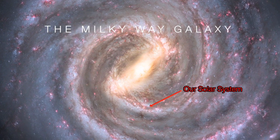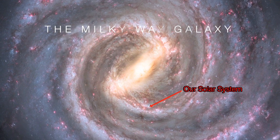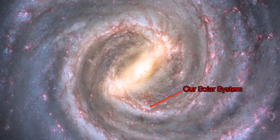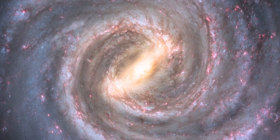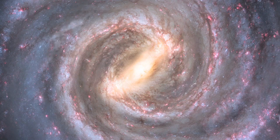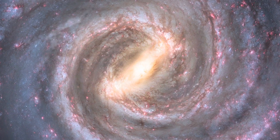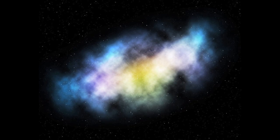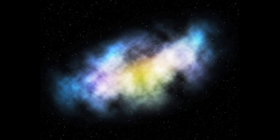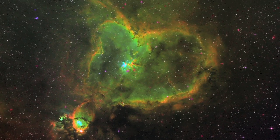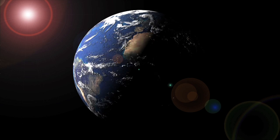Our solar system is located in the Milky Way galaxy. Our galaxy is one of the billions of galaxies in our universe and contains millions of stars, dust particles, and gas that create celestial bodies, such as planets and moons.